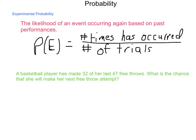Let's look at a situation. A basketball player has made 32 of her past 47 free throws. She's now stepping up to the line for another free throw. What is the probability of her making this shot?